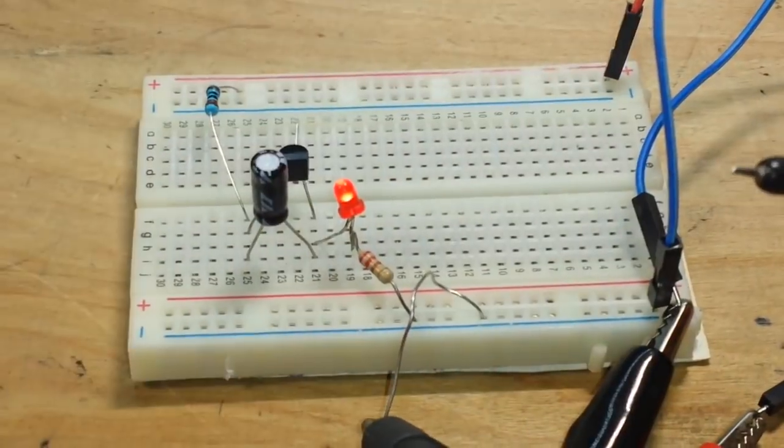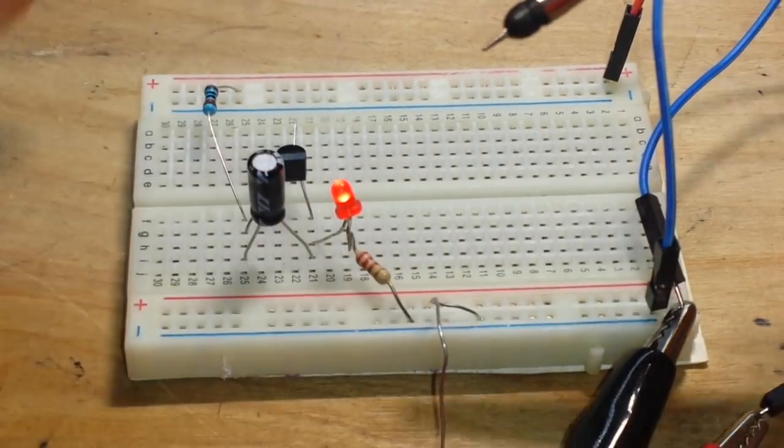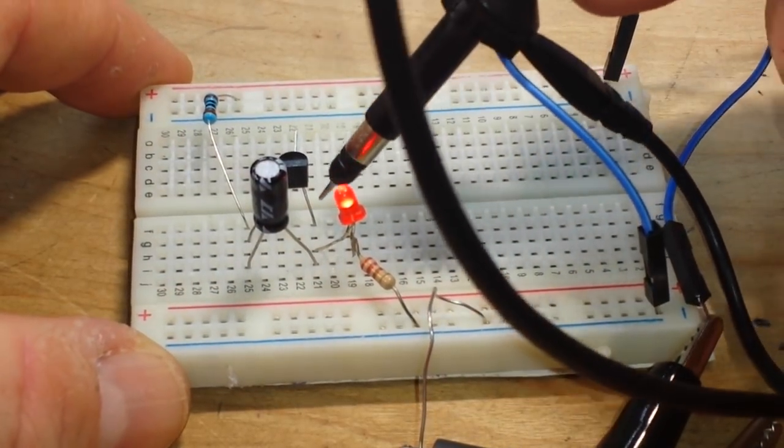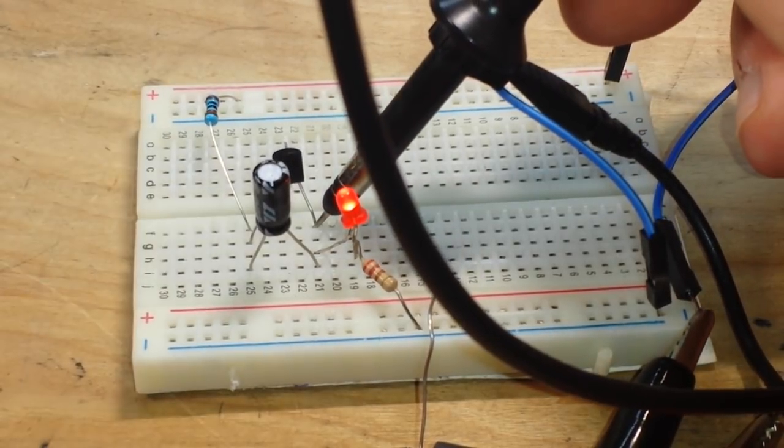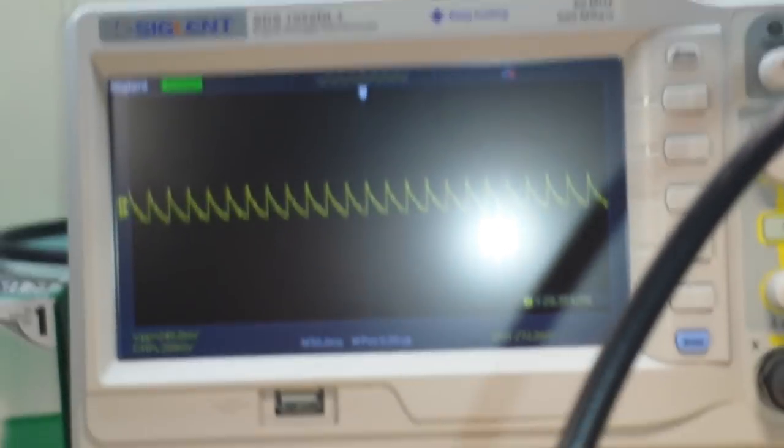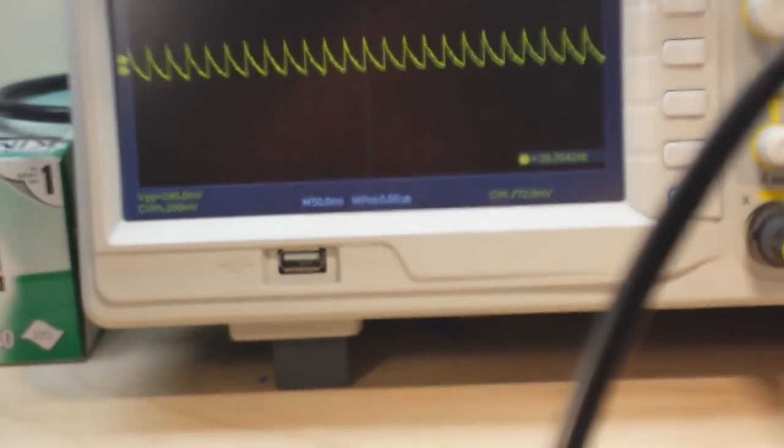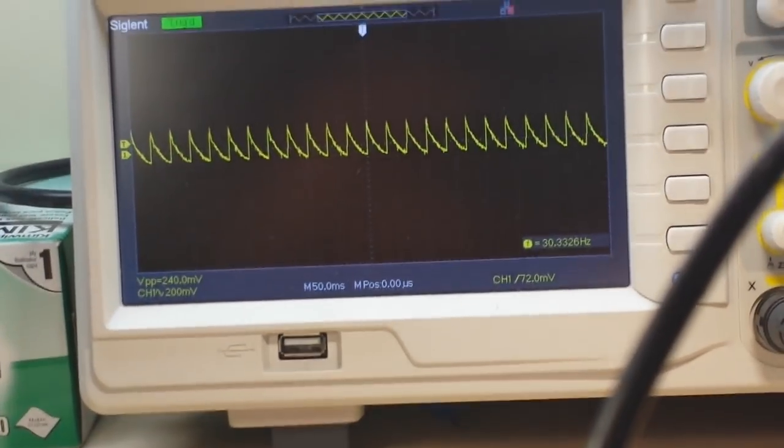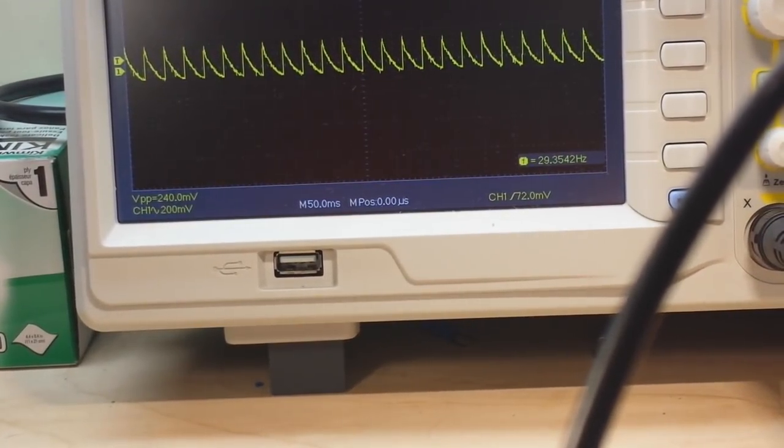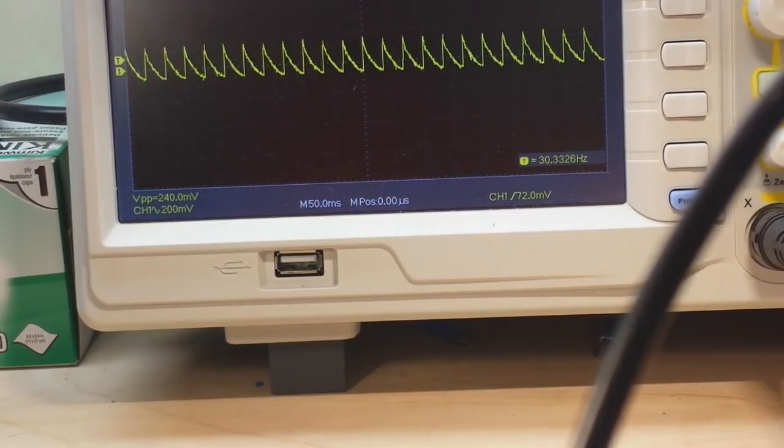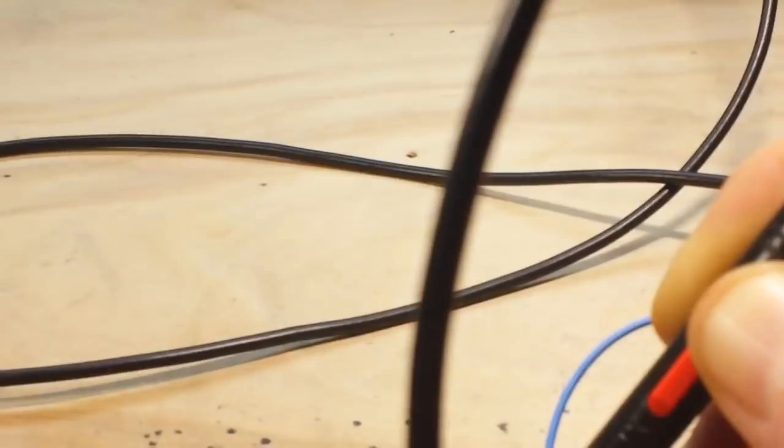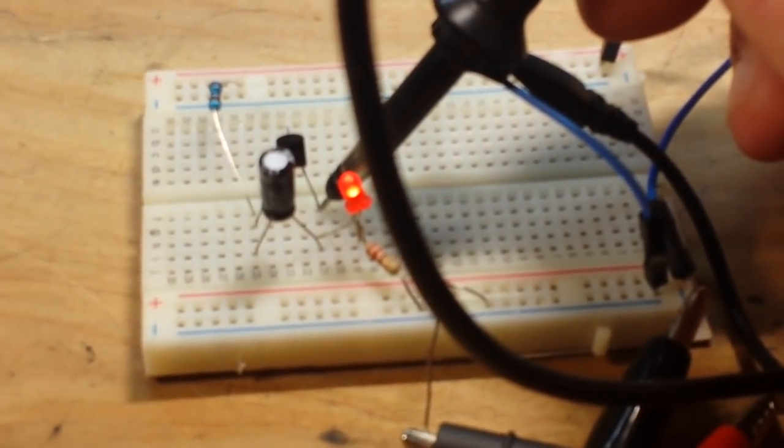If I take the probe here and we'll probe the output, which is actually the collector in this case of the transistor. Hold on, I got the light on. Okay, what do we see there? We see a sawtooth wave pattern at about 30 hertz. So that's weird, right?